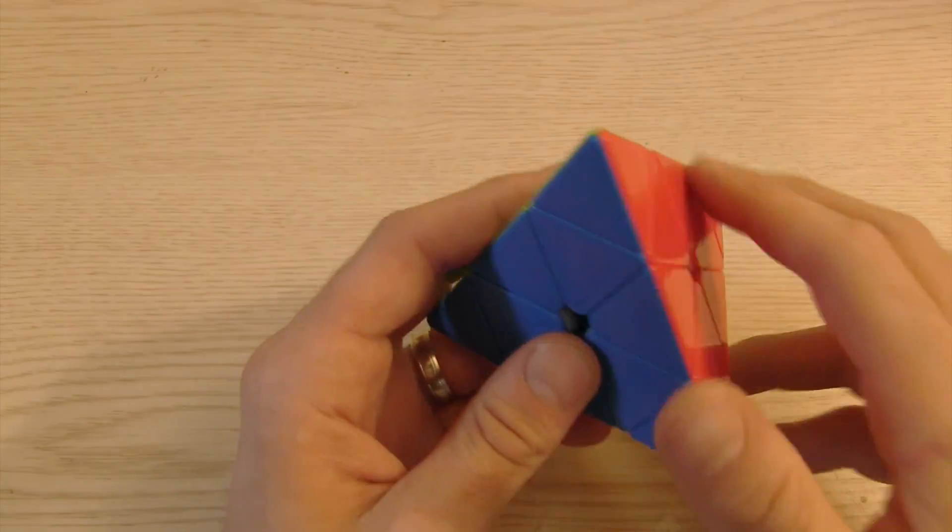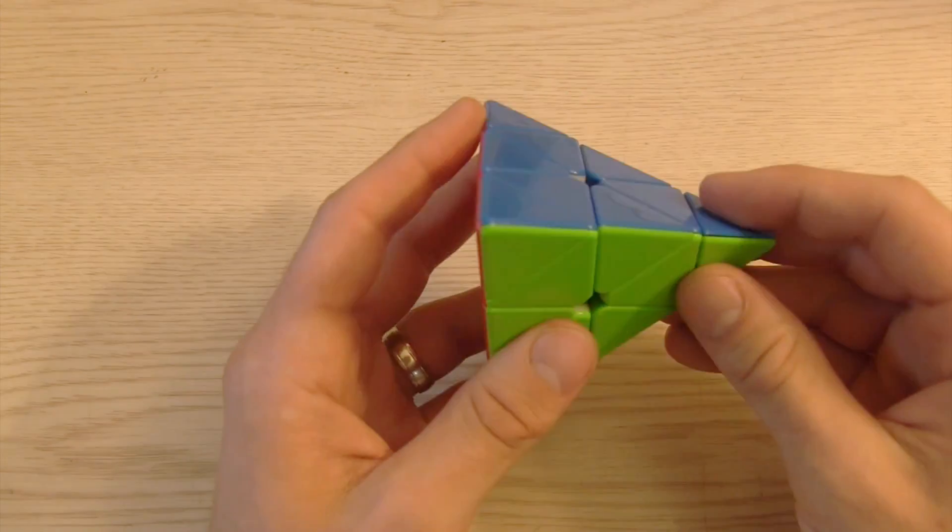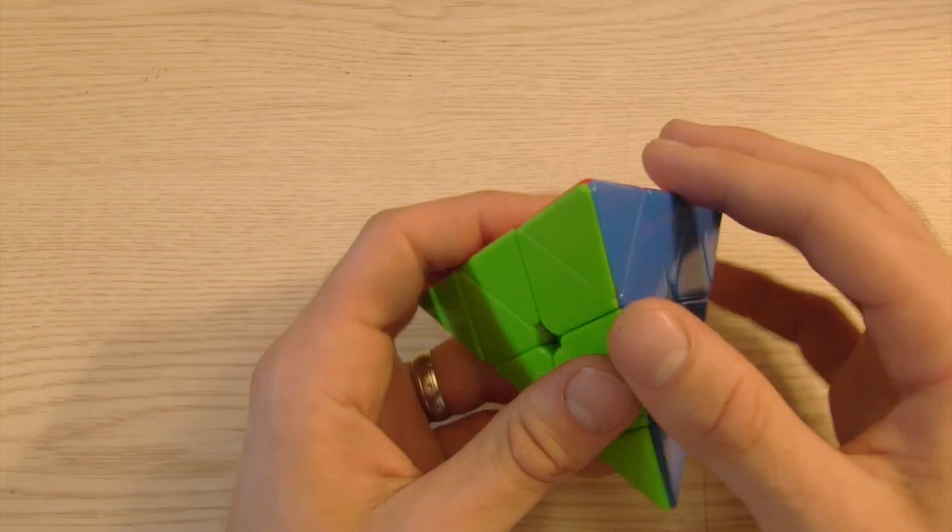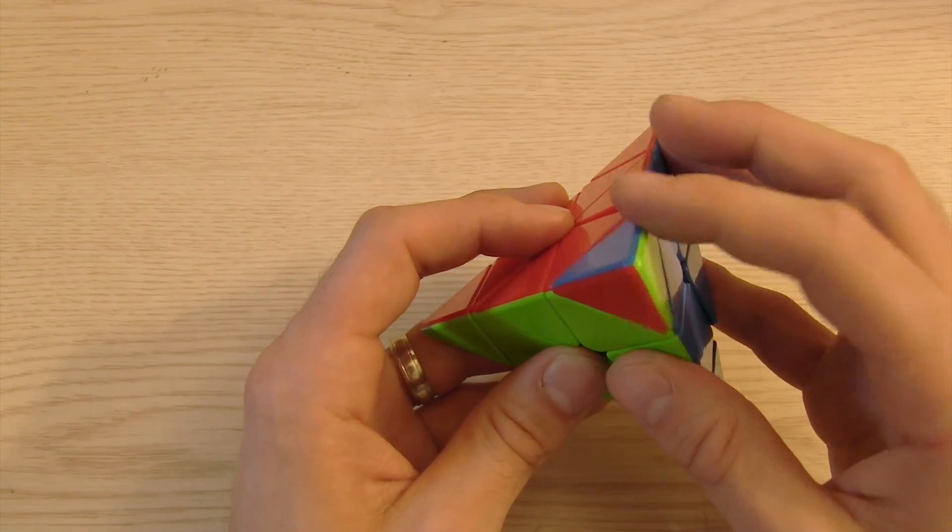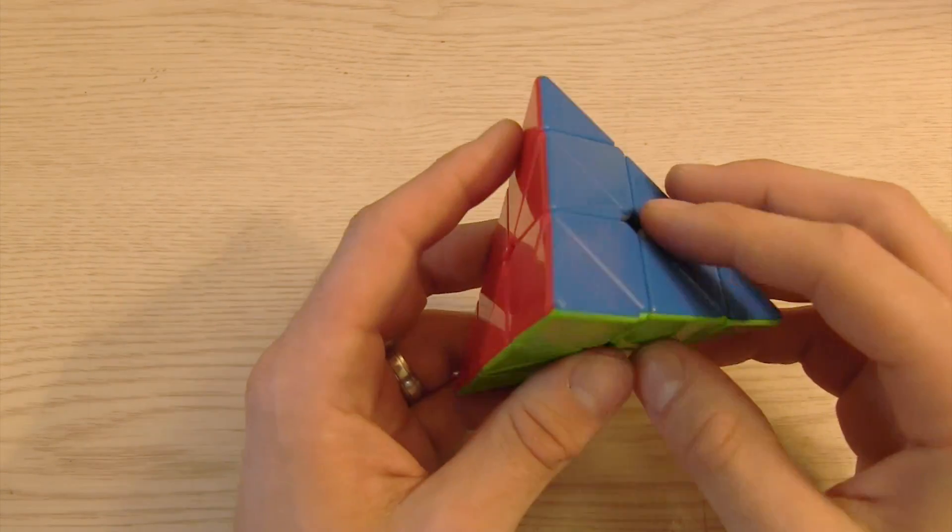So first I'm going to assume that you have never solved a pyraminx before. A couple things about the pyraminx is that it's pretty simple. There are four tips and these tips really don't do anything. They spin in place so you don't really have to worry about them being out of place.